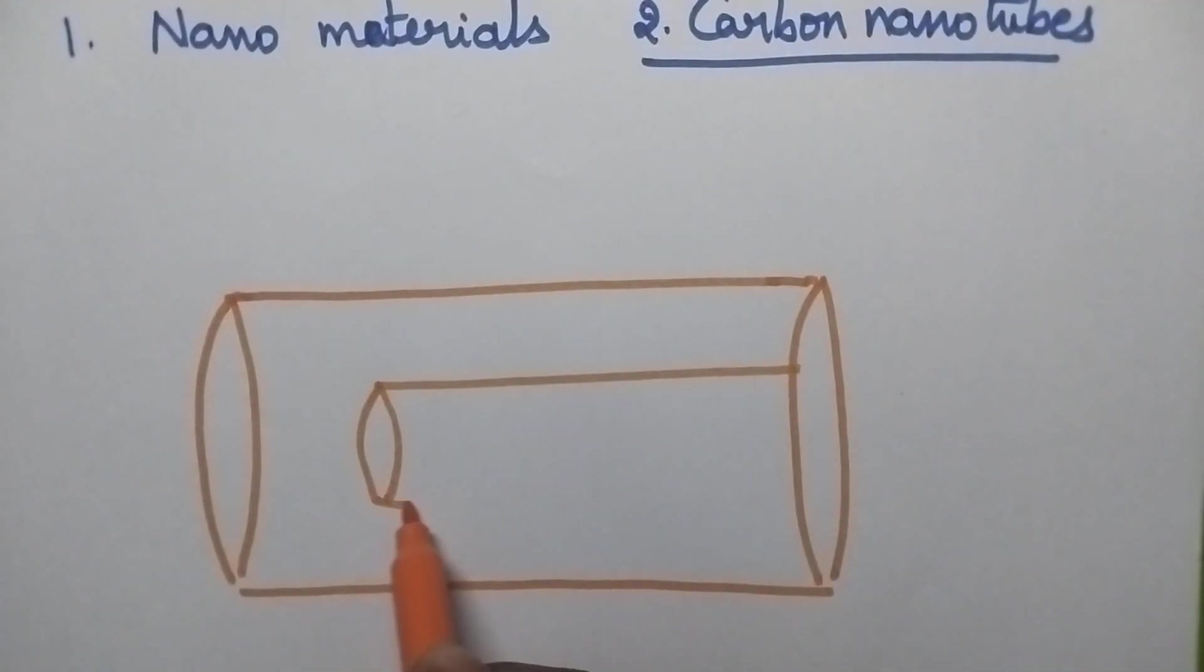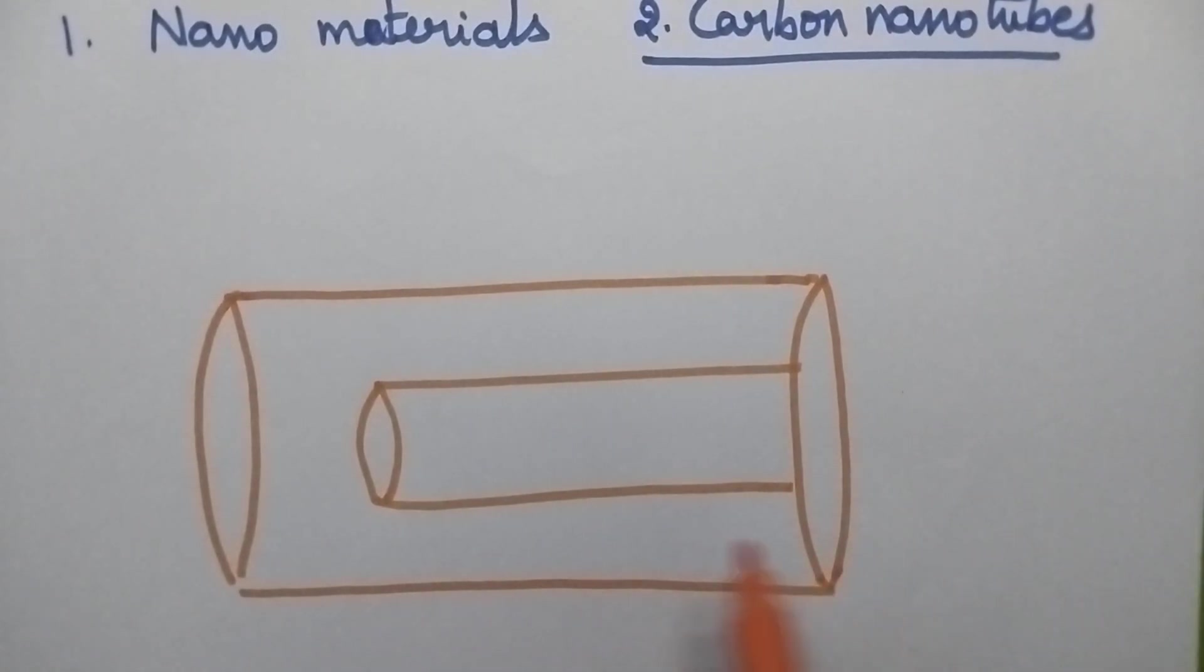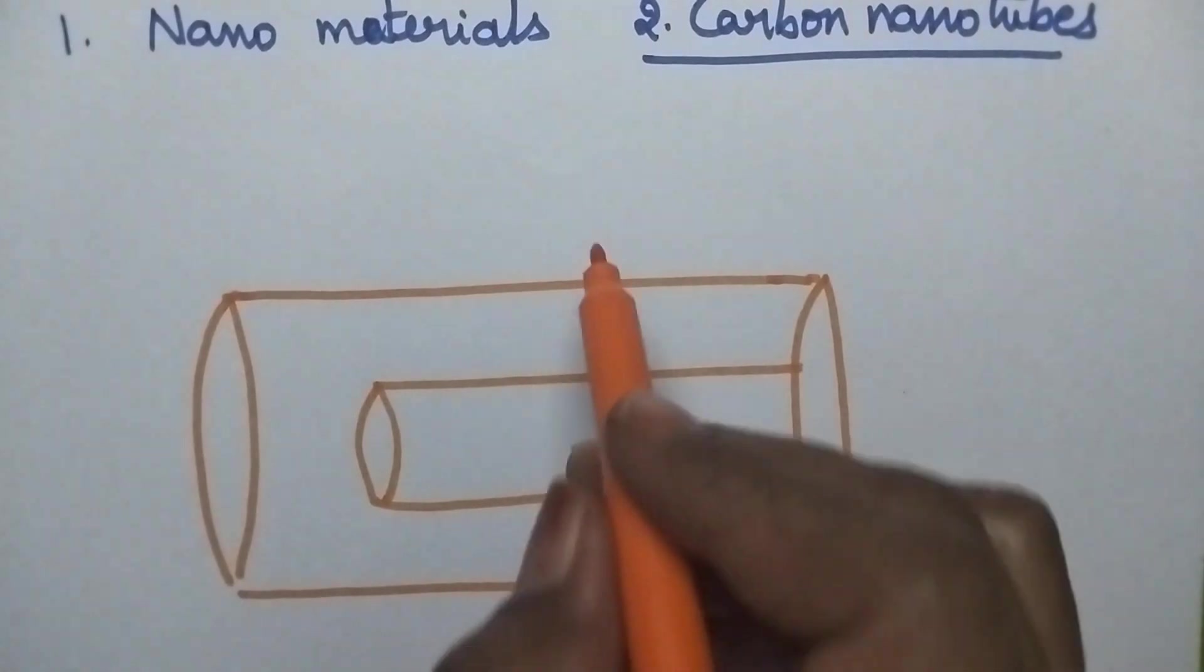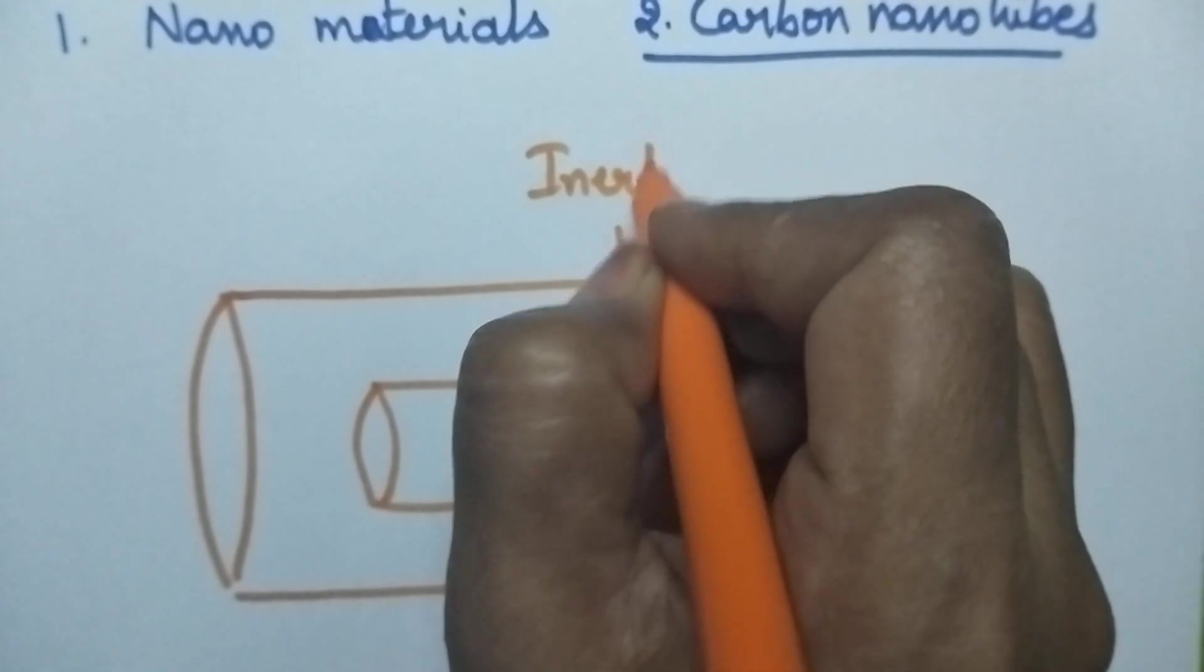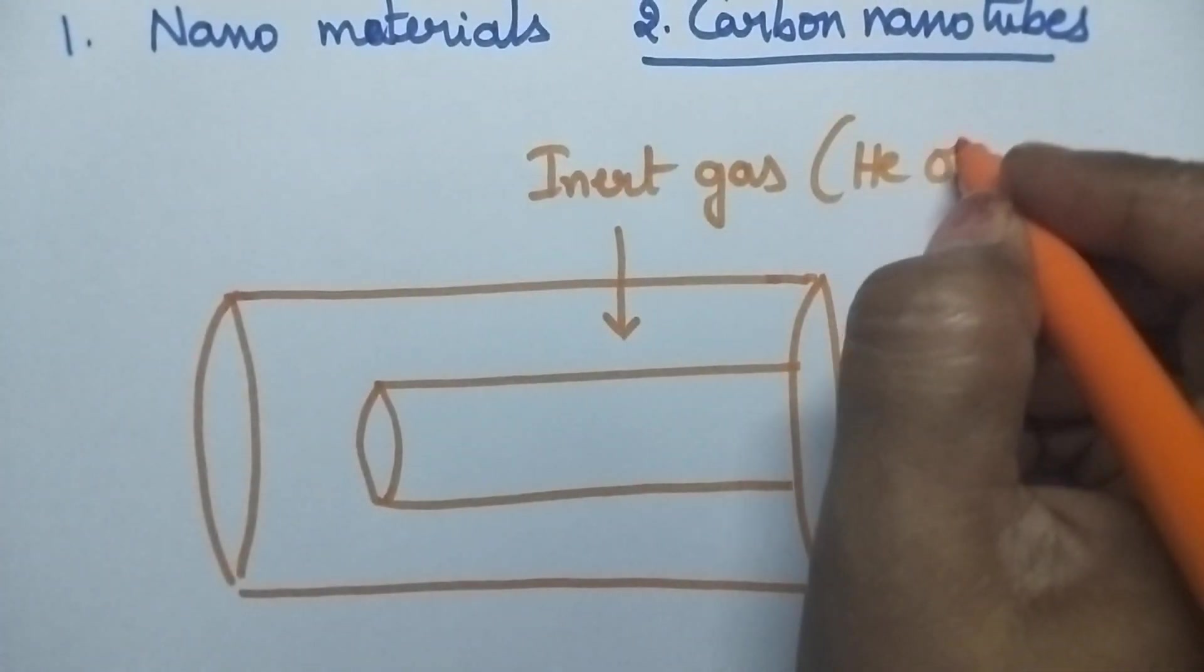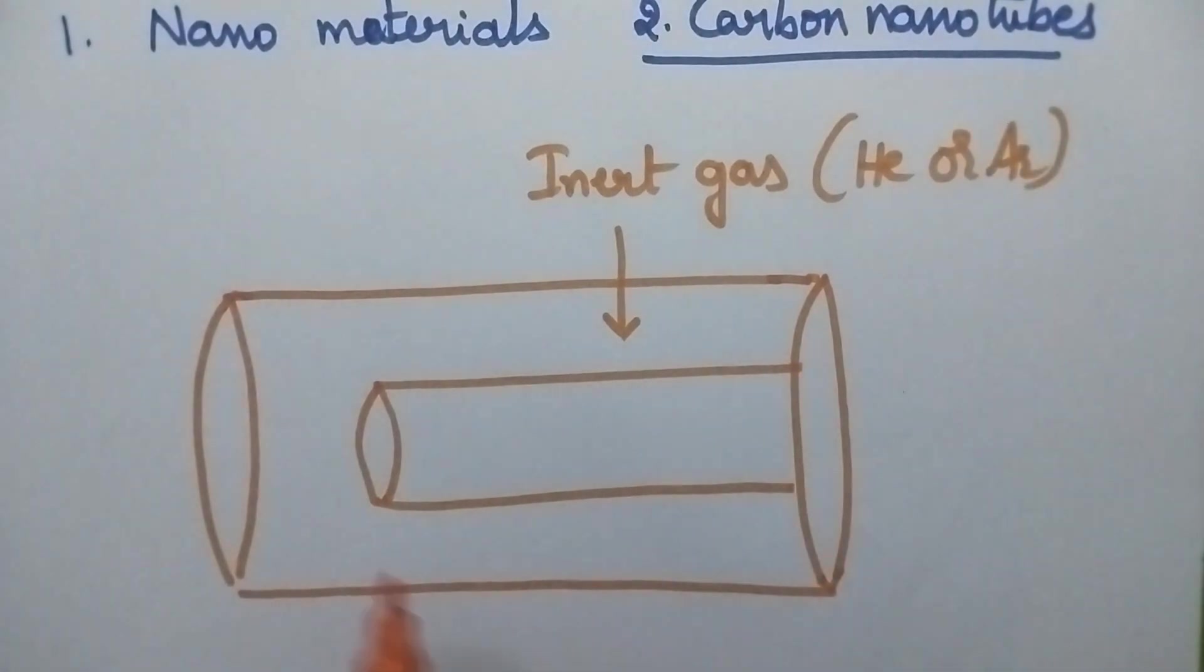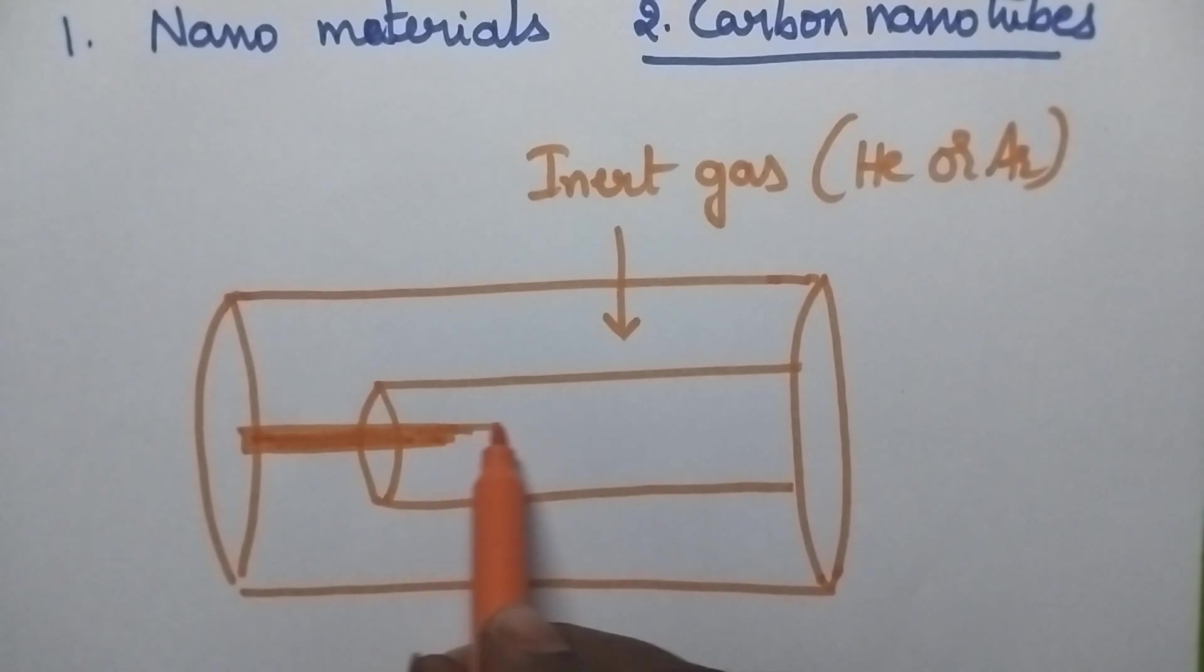The whole experiment is done in a vacuum chamber filled with inert gas such as helium or argon. The two carbon rods act as electrodes.